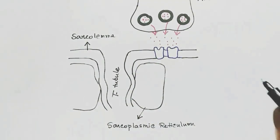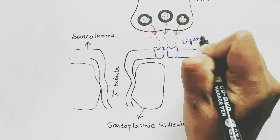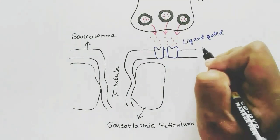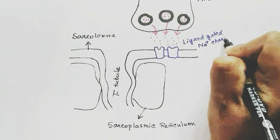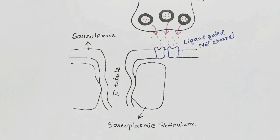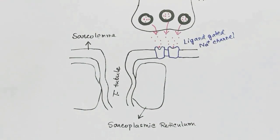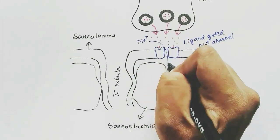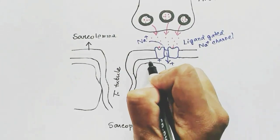There are channels present in the sarcolemma, which are ligand-gated sodium channels. These are opened by the ligand, acetylcholine, and Na+ influx occurs in the muscle, making the muscle positive from negative.